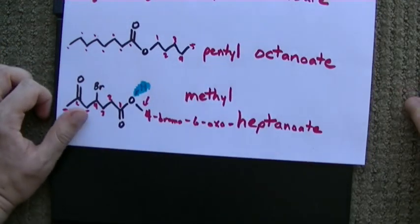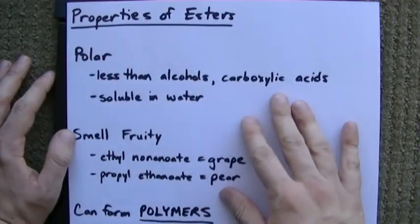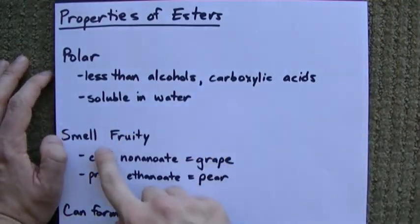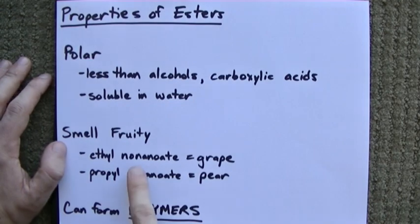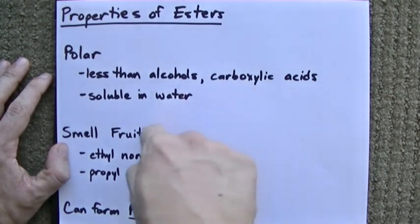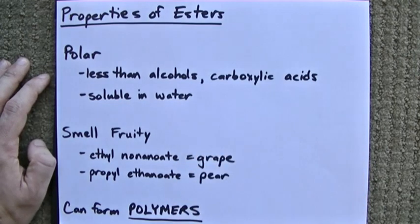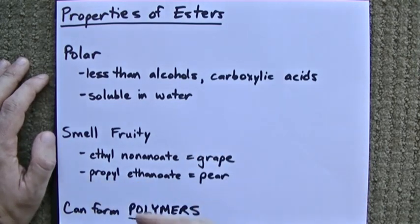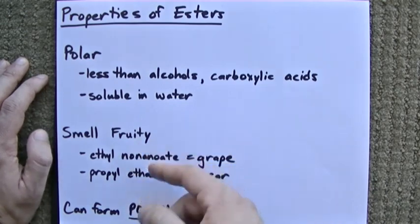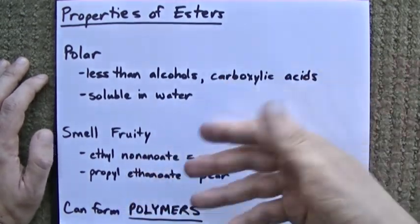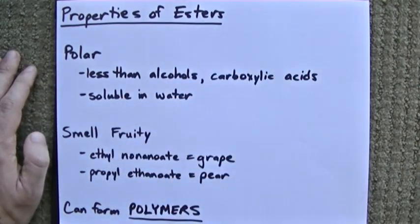So, who cares about esters? We all do, because esters smell fruity. Ethyl nonanoate, so that's a 9-carbon chain with the ester linkage, and then 2, actually smells like grape. Propyl ethanoate smells like pear. A whole bunch of the esters smell fruity. You can Google it. Make whatever flavor and scent you want.